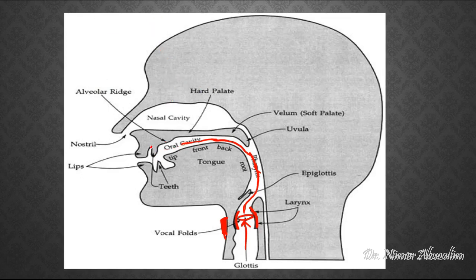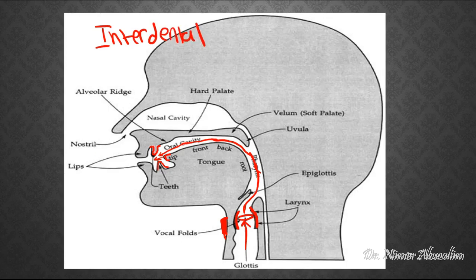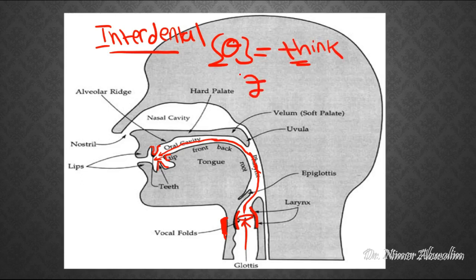Now, if you can see here, these are the top teeth and these are the bottom teeth. As the air passes through, sometimes we can extend our tongue and place it right in between the teeth. If that is the case, we have sounds produced between the teeth — another word for that is interdental. The only English sounds that are interdental are the TH sound as in 'think,' and the TH sound as in 'this.'